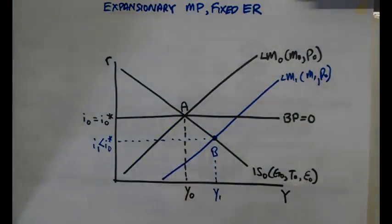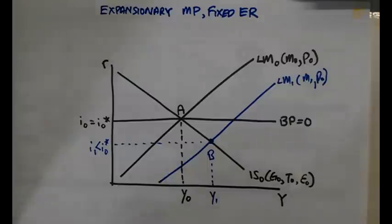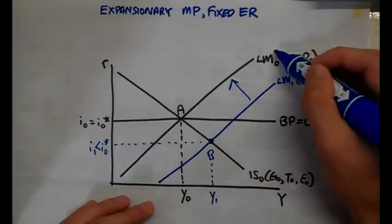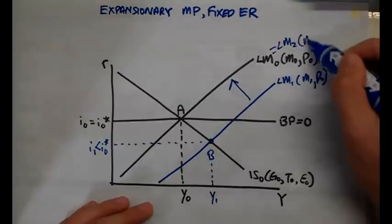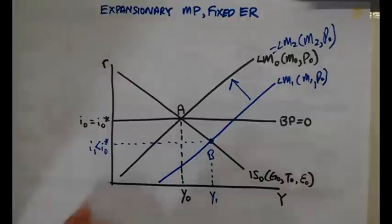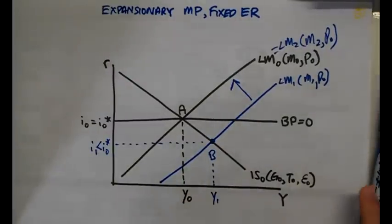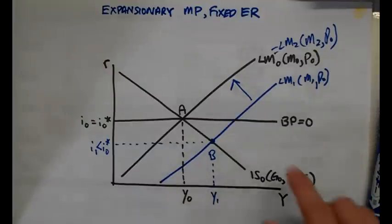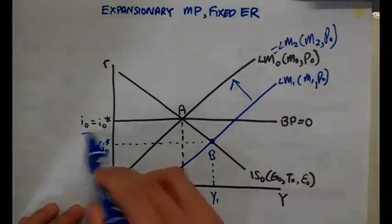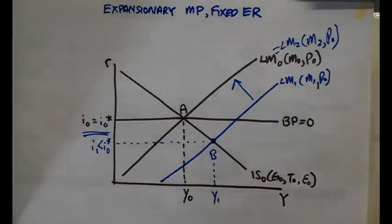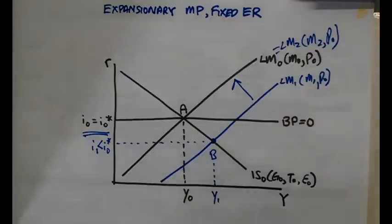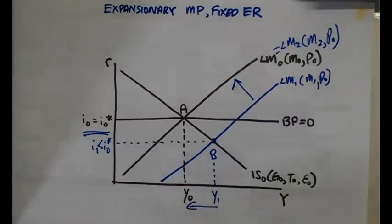By buying up local currency, the government soaks up money, reducing the money supply. Therefore the LM curve shifts back up to point A — LM0 equals LM2 where money supply is M2/P0. So expansionary monetary policy is not effective under a fixed exchange rate with perfect capital mobility, because output just went from Y0 to Y1 and back to Y0 again.